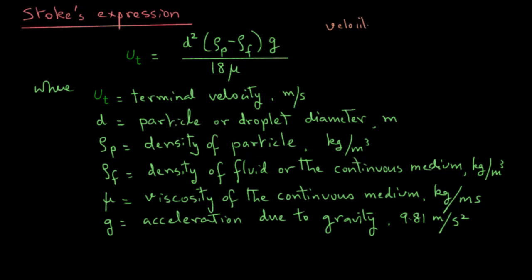So in descriptive terms, if we look at this equation, the Stokes expression, we will note that the terminal velocity will increase with the particle diameter. In fact, the particle diameter term is squared, so particle diameter has a considerable influence on the terminal velocity.